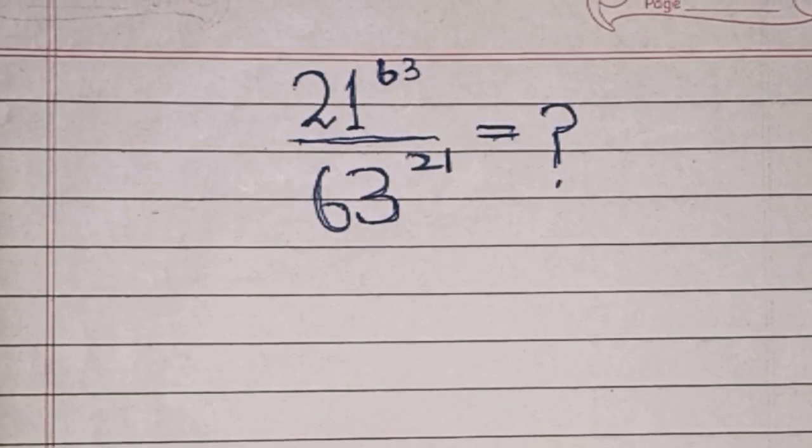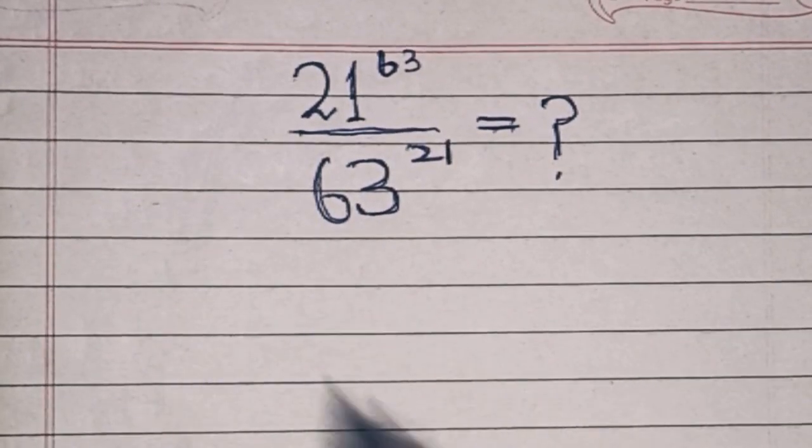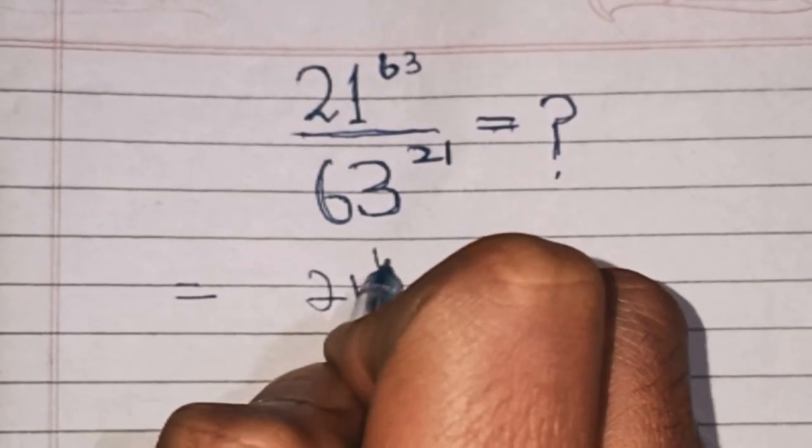Hi everyone, welcome. Let's solve this problem which is 21 power 63 over 63 power 21. So let's start. In the first step we can write this as 21 power 63